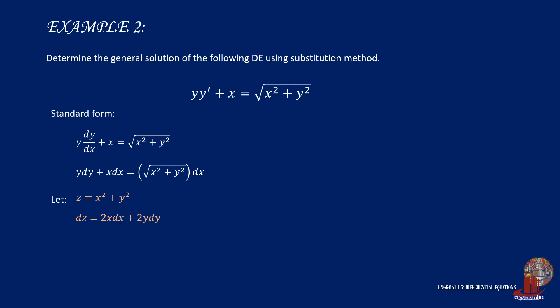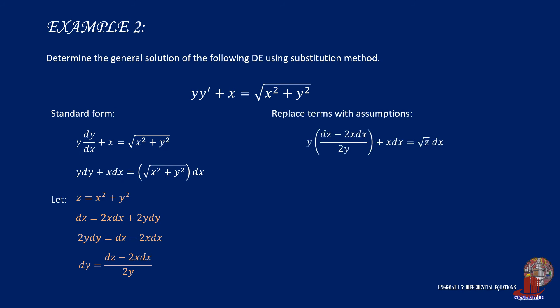I choose to work with dy, so 2y dy will be equal to dz minus 2x dx, where dy is isolated as dz minus 2x dx all upon 2y. Now substitute the assigned values into the equation, making it y times dy — which is dz minus 2x dx all upon 2y — then add x dx is equal to the square root of z times dx. The y from the first term cancels out, and negative x dx cancels with the positive x dx, leaving us with dz upon root of z is equal to 2dx.